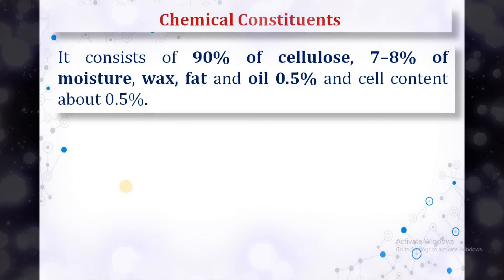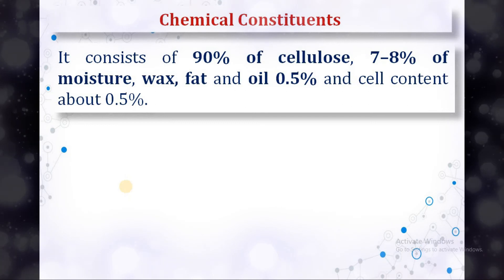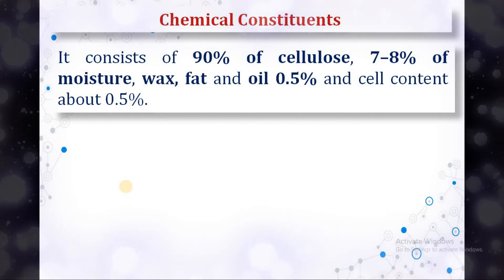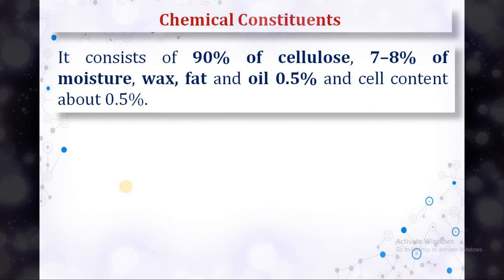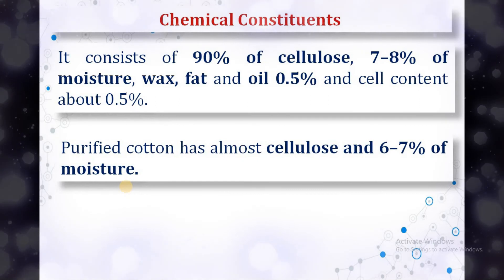Cotton consists of 90% cellulose, which is the important ingredient of cotton, along with 7 to 8% moisture, wax, fat, and oil, and cell content about 0.5%. Purified cotton has almost entirely cellulose and 6 to 7% moisture.